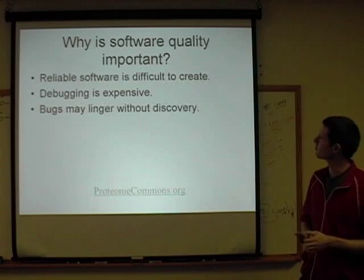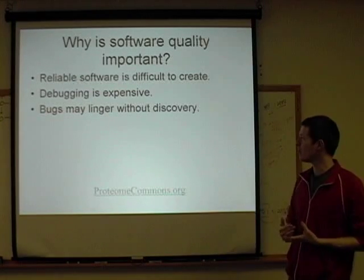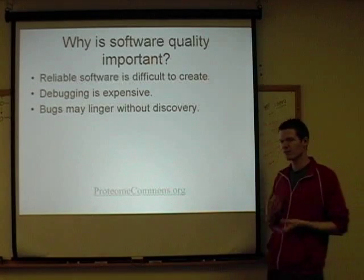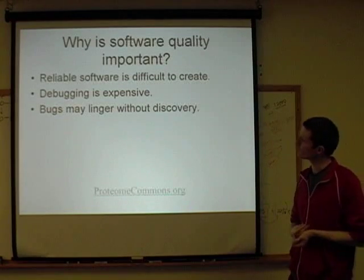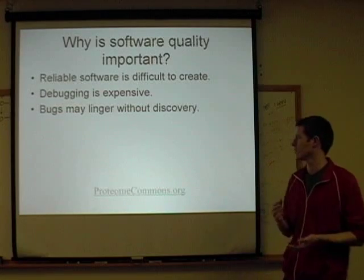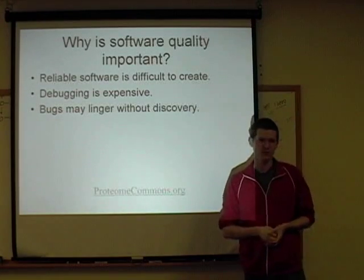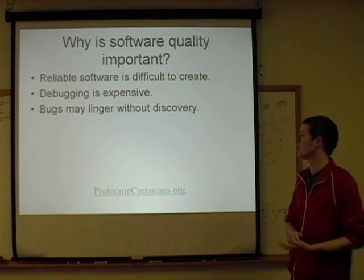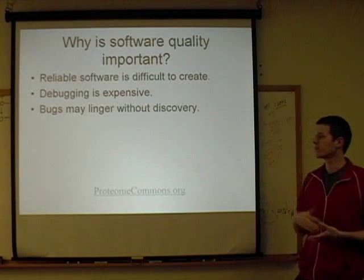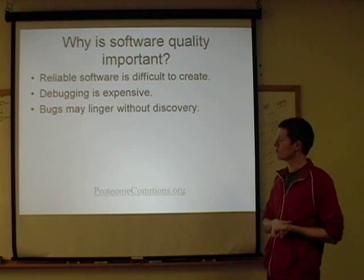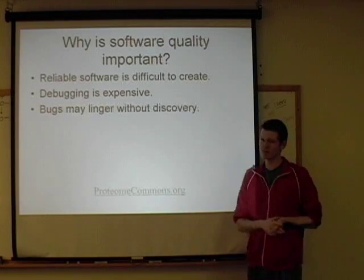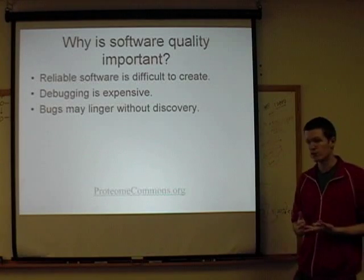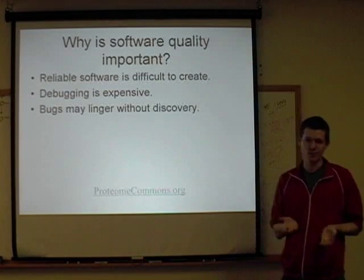Before we get going, we probably want to discuss why software quality is so important. The top reason is that reliable software is difficult to create. As a software project grows in scope, you'll typically see more problems develop. If you use the correct tools, you can get more reliable software from the get-go. Also, debugging is very expensive, and you spend a significant amount of time debugging. Catching bugs earlier on saves a lot of time and money. Bugs that are not found not only affect reliability, but may also affect the correctness of the software.